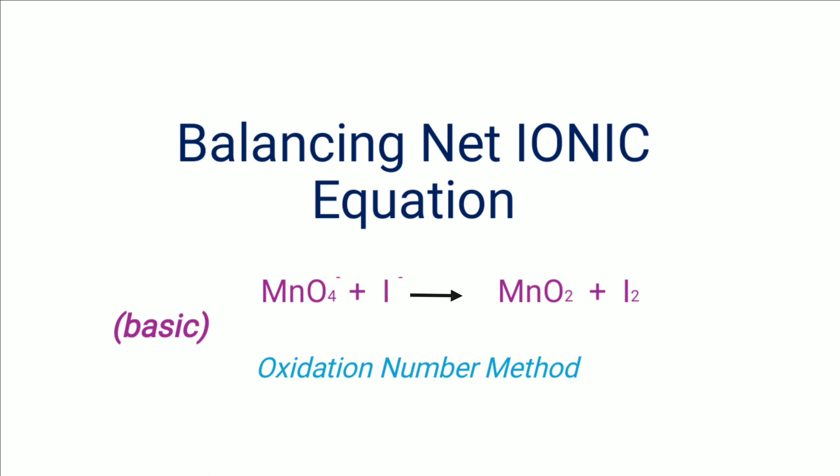Friends, let's balance one more net ionic equation. This equation is for the reaction between permanganate ion, or manganate-7 ion, with iodide ion to form manganese dioxide and iodine. This reaction takes place in basic medium. Let's balance this equation by the oxidation number method.